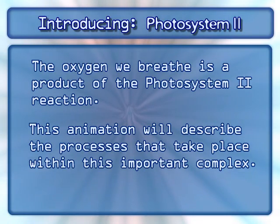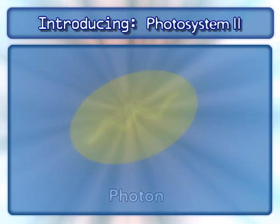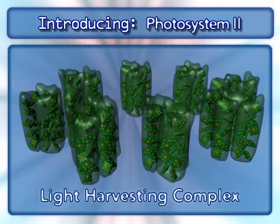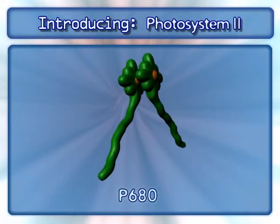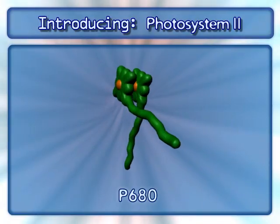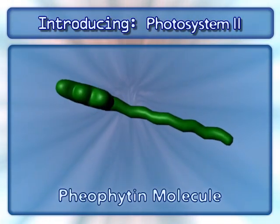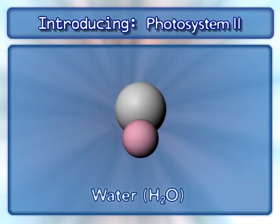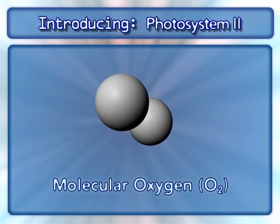Photosystem II involves several key components, including photons, light-harvesting chlorophyll binding proteins, a pair of chlorophyll molecules known as the P680 reaction center, pheophyton molecules, and plastoquinones, along with water and oxygen.